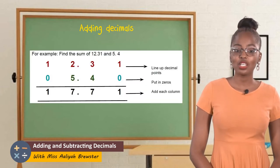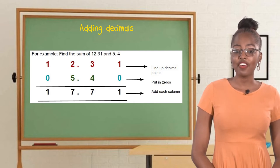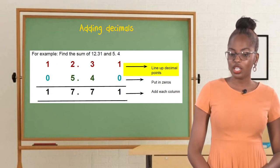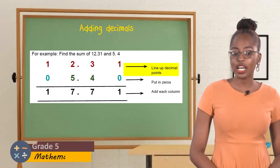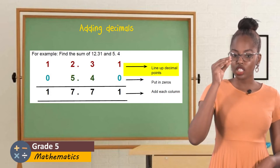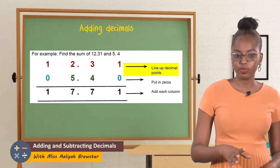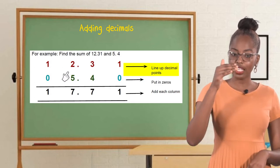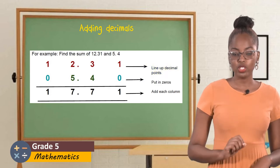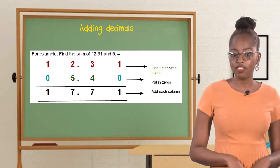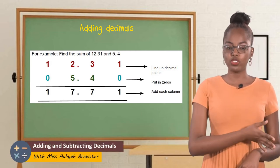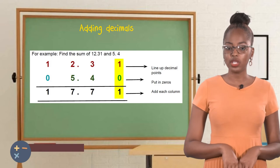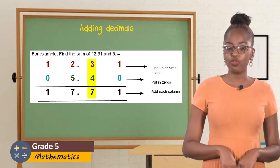Let's say you're asked to find the sum of twelve and thirty-one hundredths and five and four-tenths. We'll first start by setting the numbers, having the decimals line up — that simply means that you set the numbers in such a way that the points fall one under the other, just as you see it being depicted on the screen. There we have point two and point five falling directly below each other. We start from the right and move to the left. Starting from the right, we first add one and zero — that gives us one. Then the other column we add three and four — that gives us seven.